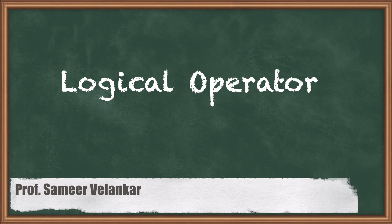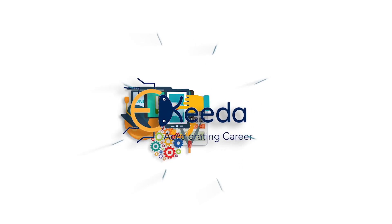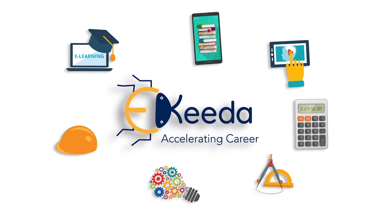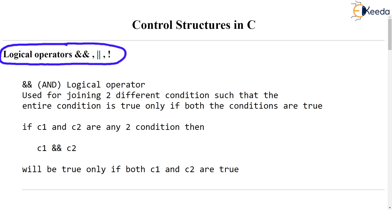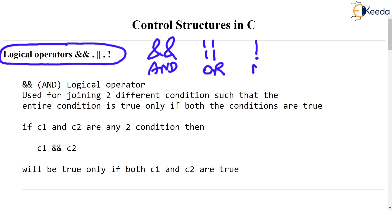Hello dear students. Let's see logical operators which are used for building or constructing complex conditions. There are three logical operators: the double ampersand symbol (&&) which is 'and', the double pipe or vertical line (||) which is 'or', and the exclamation symbol (!) which is 'not'. These three are logical operators.